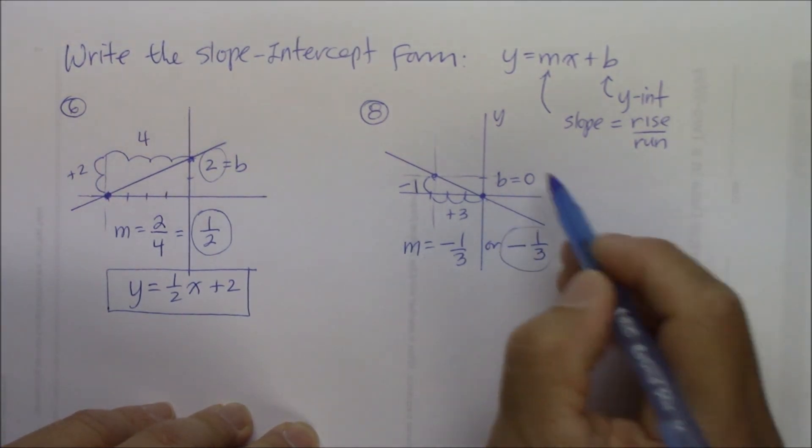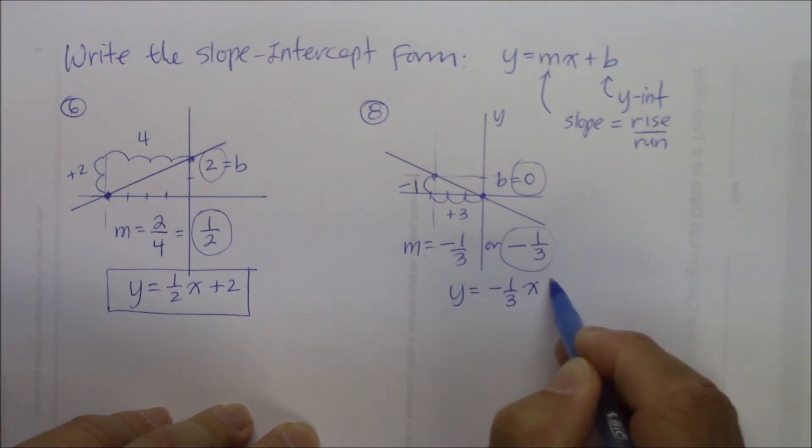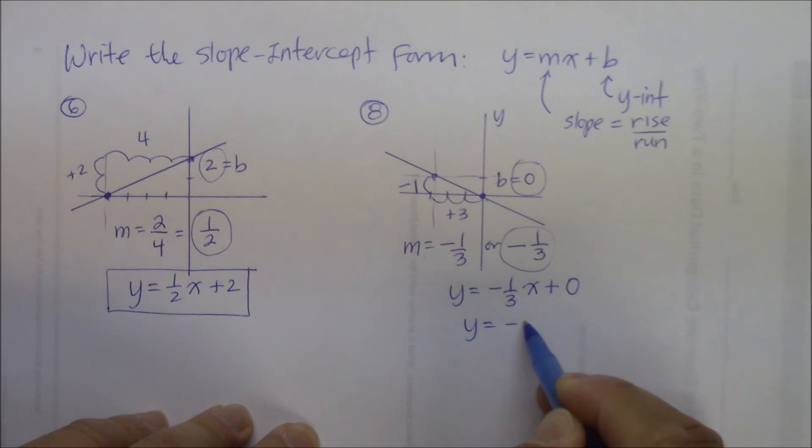So that becomes a slope, and this is your y-intercept. So you could go y is equal to negative one-third x plus zero. But since it's zero, we don't even have to put that there. We just simply go y is equal to negative one-third x, and that'll be the slope-intercept form.